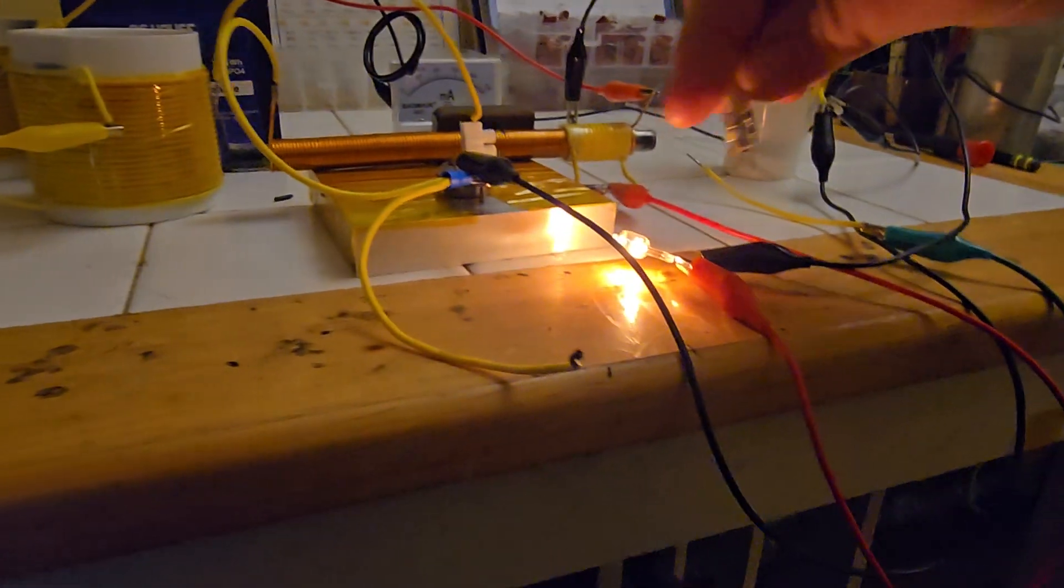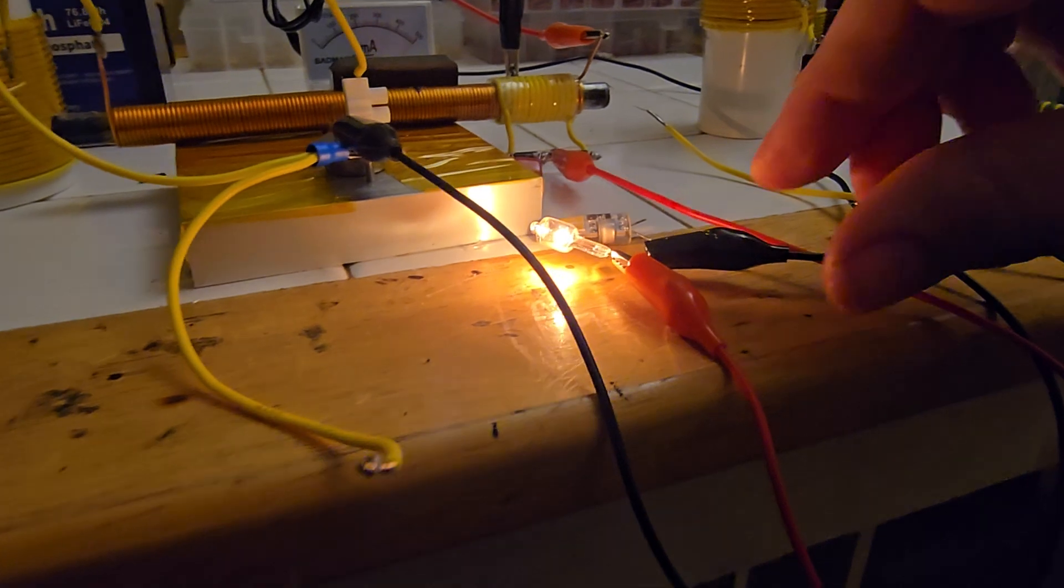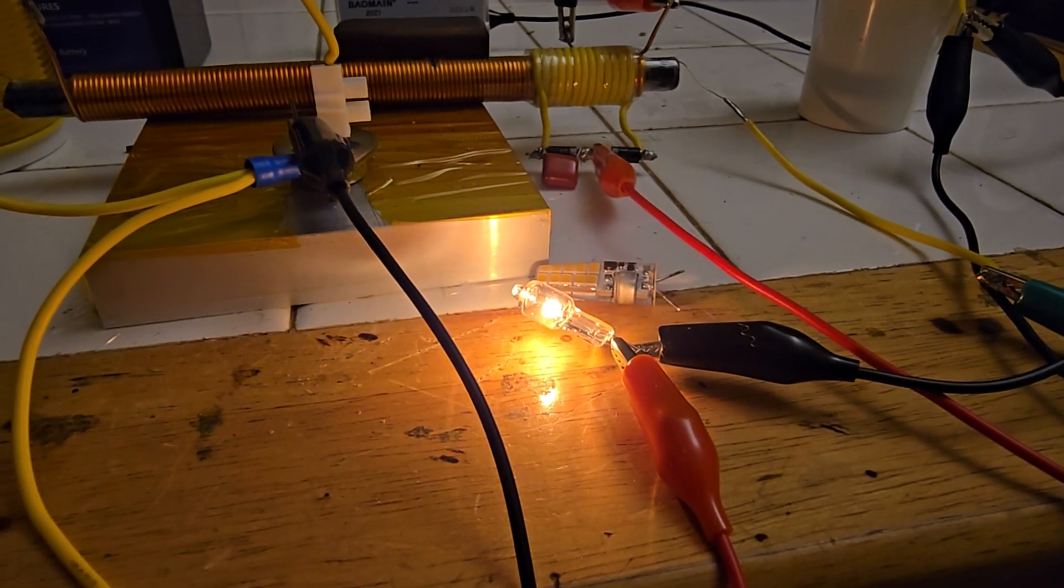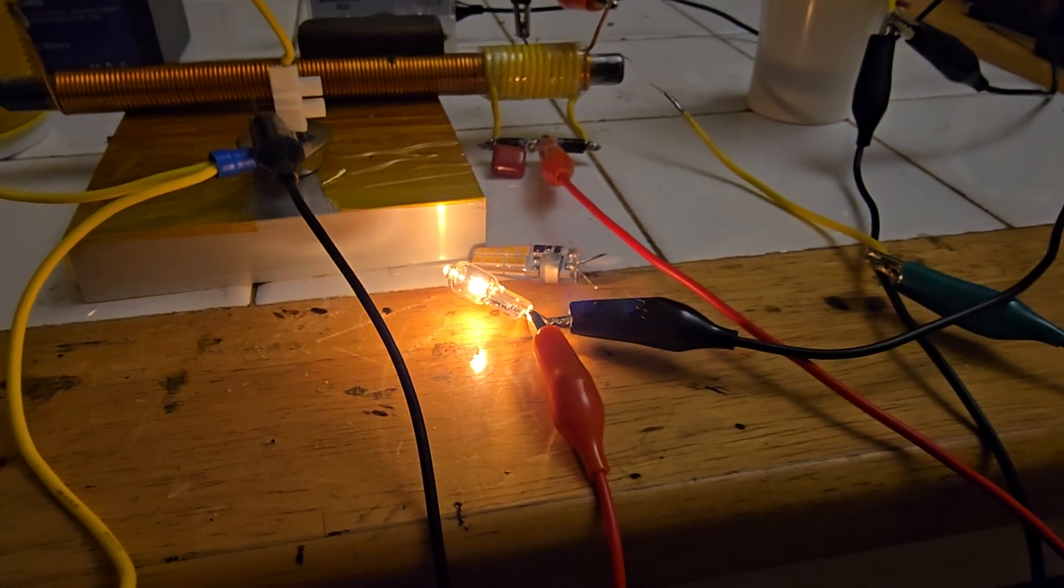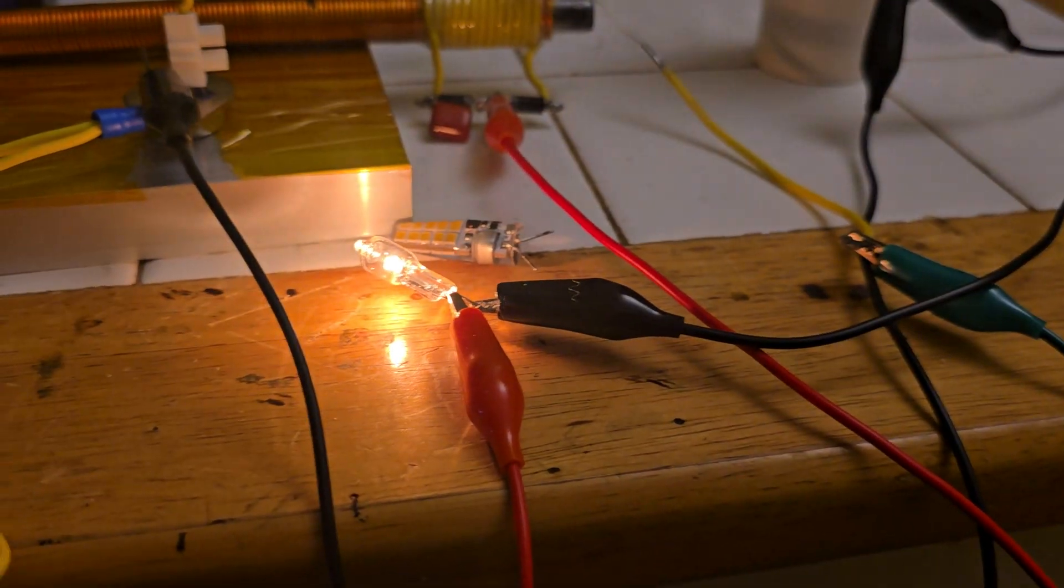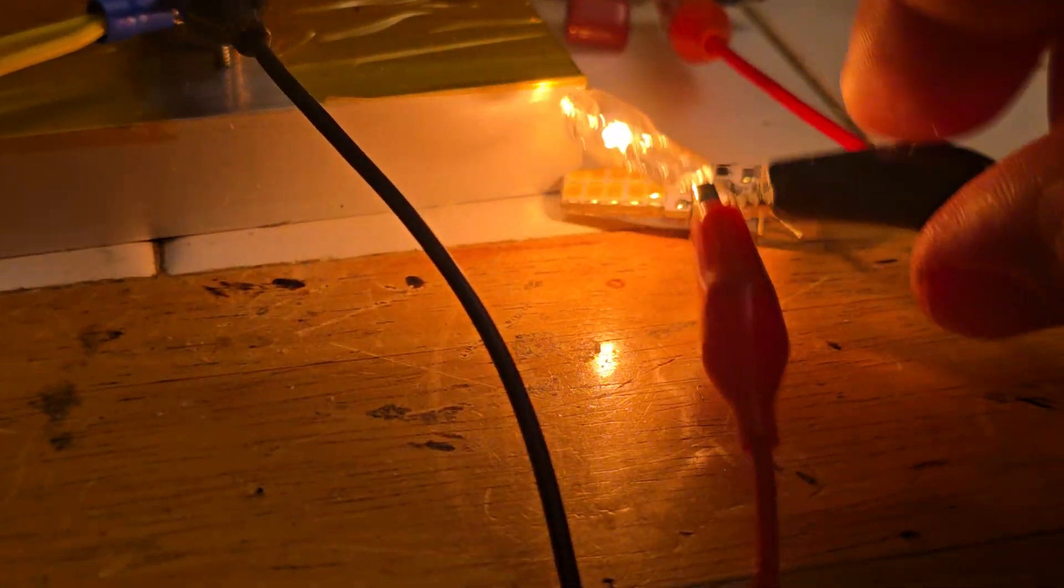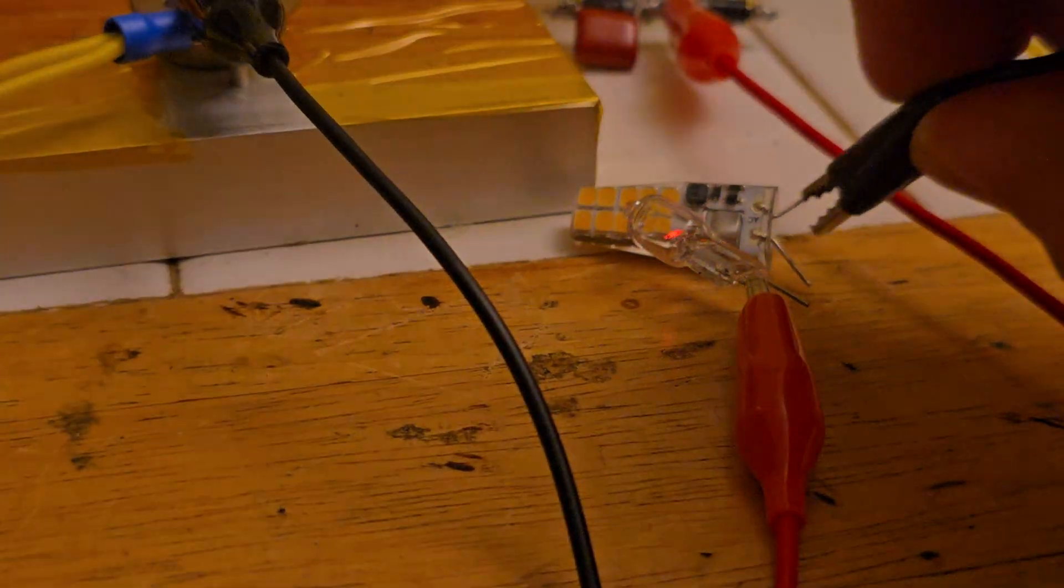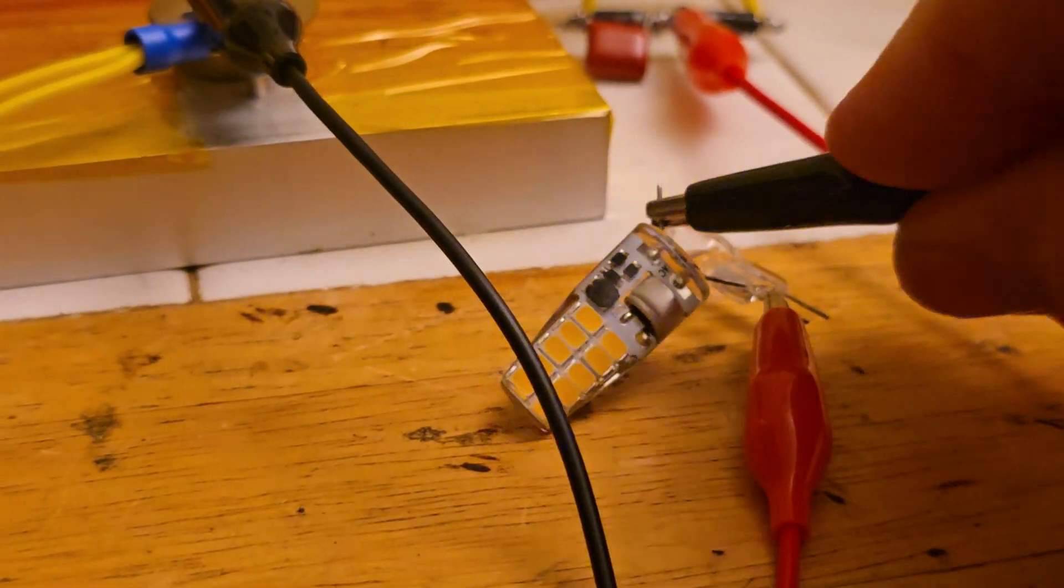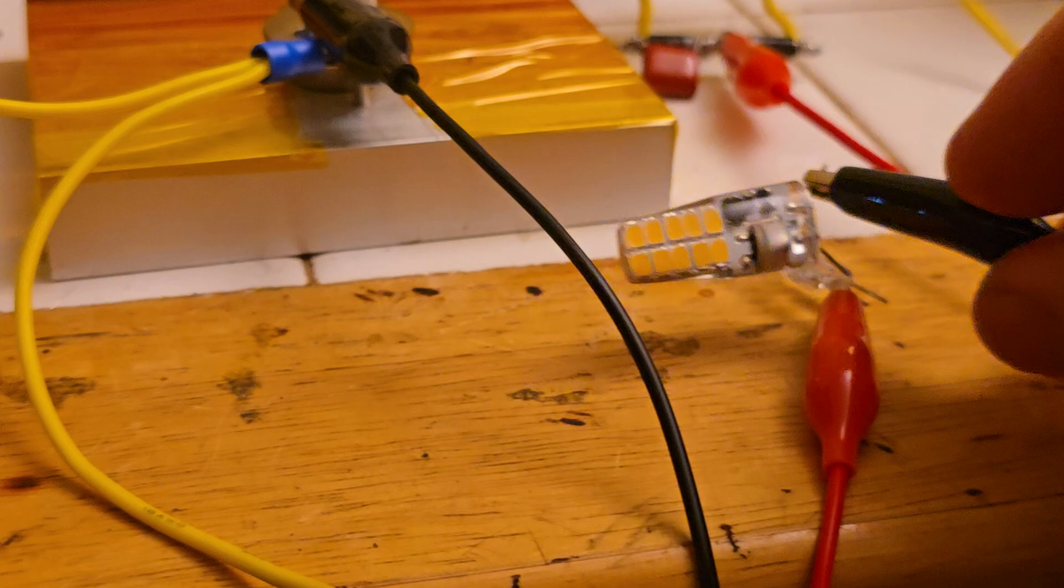And it can run LEDs very bright. So that's an incandescent, zoom in on that. And my phone is acting glitchy just being near this thing. So, incandescent being run off the resonant coil. LED now being run, blinding bright, Jesus.